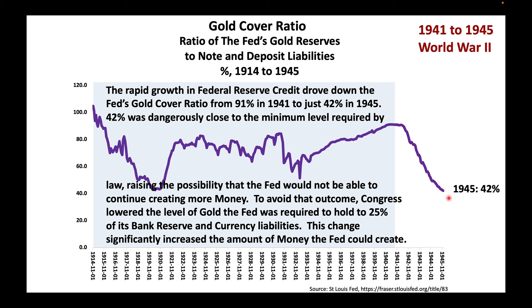42% was dangerously close to the minimum level required by law, raising the possibility that the Fed would not be able to continue creating more money. To avoid that outcome, Congress lowered the level of gold the Fed was required to hold to 25% of its bank reserves and currency liabilities. This change significantly increased the amount of money the Fed could create.